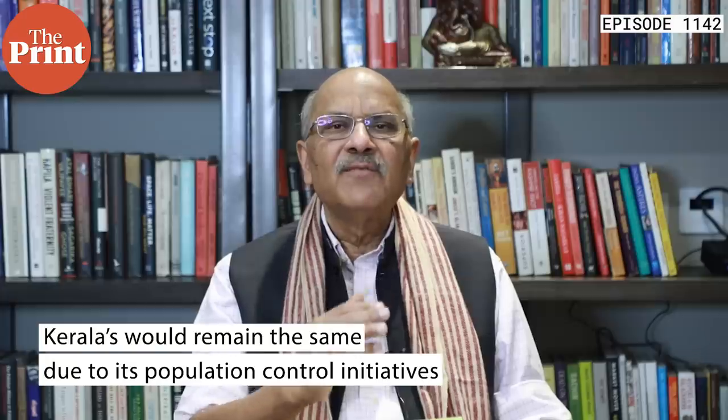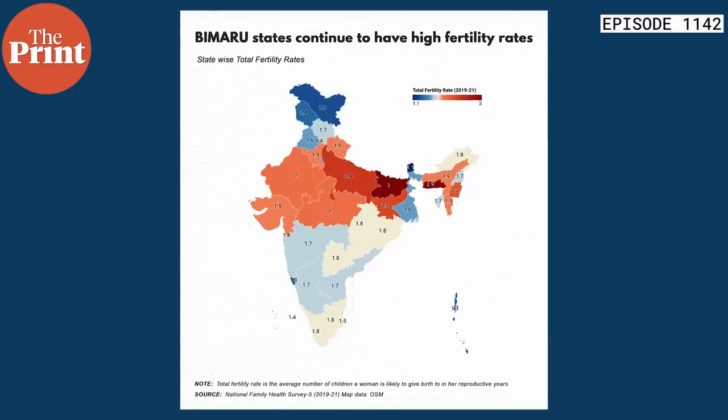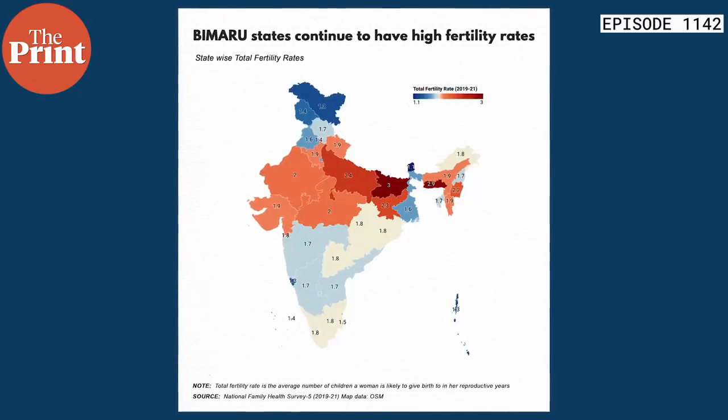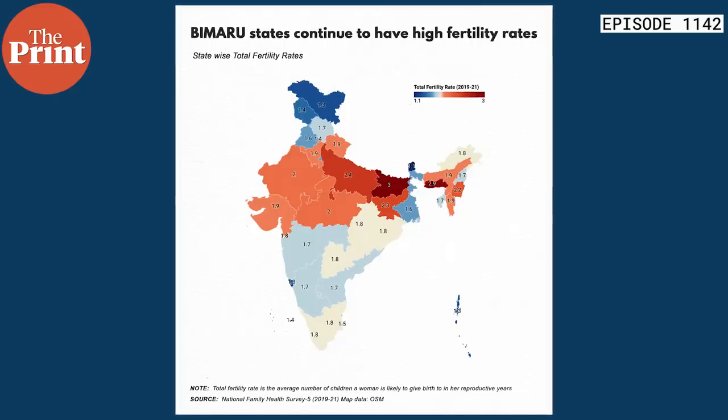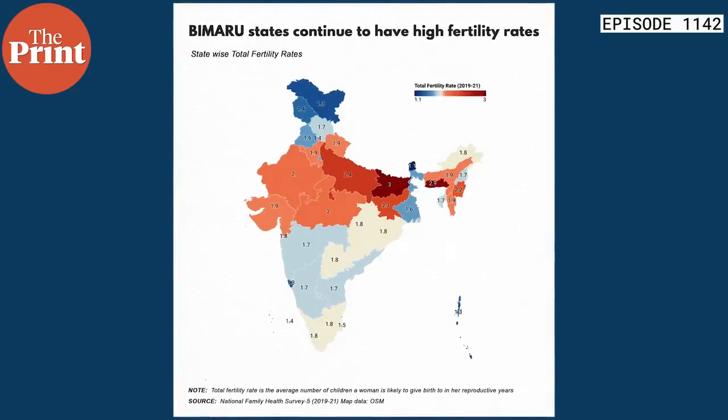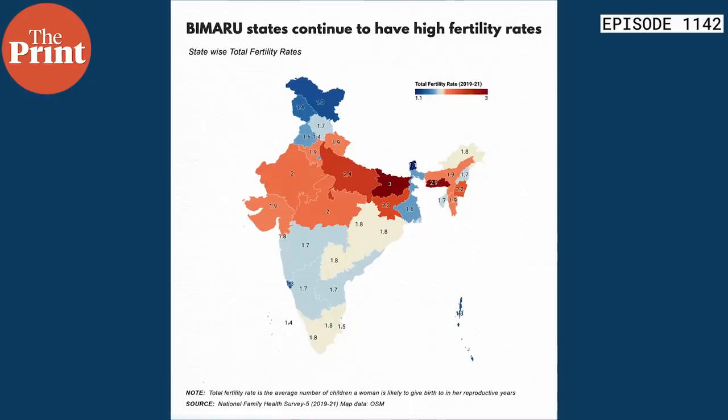A TFR of 2 is roughly what you need for replacement value — meaning a hundred people are replaced by a hundred more. Anything above 2 means your population will go up; below 2 it will not. Kerala has been at 1.56–1.6, gone up slightly to around 1.8, but well below replacement level. UP on the other hand is growing well above 2.3–2.4%. UP is slowly getting its act together, but the state that isn't is Bihar.